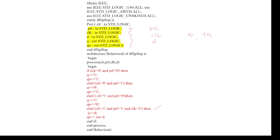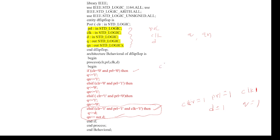Coming to the code, we can observe this: when clock equals 1, clear equals 1, and preset equals 1, the clock will activate and whatever input you give will appear at the output. That is our required code. For the remaining cases — when clear equals 0 and preset equals 0 — we get Q equals 1 and QN equals 1. So like this we need to write our code for the flip-flop.